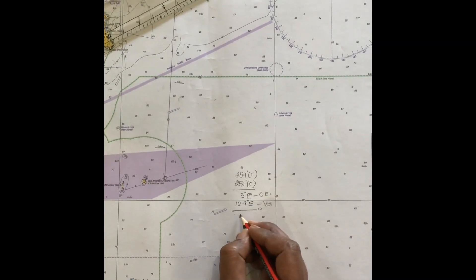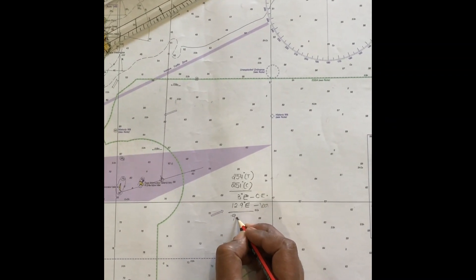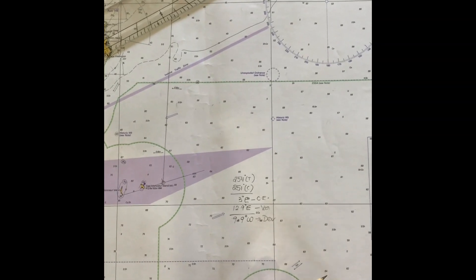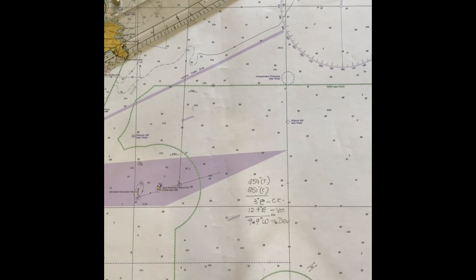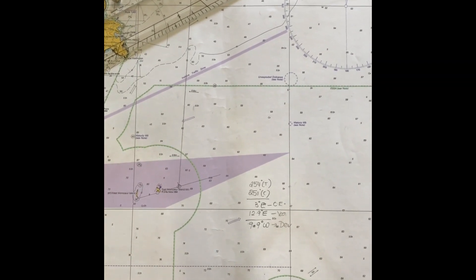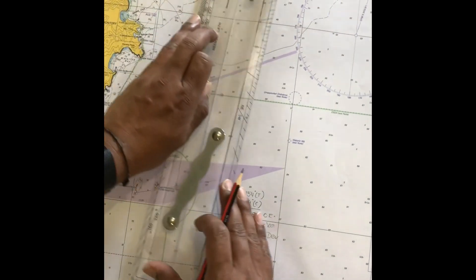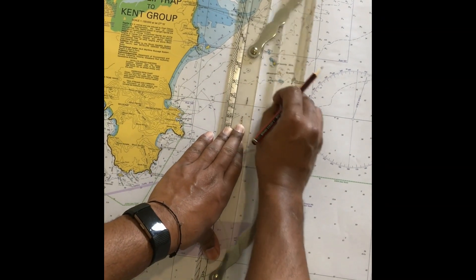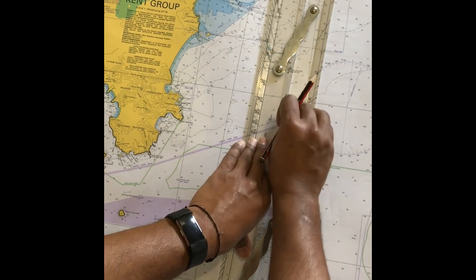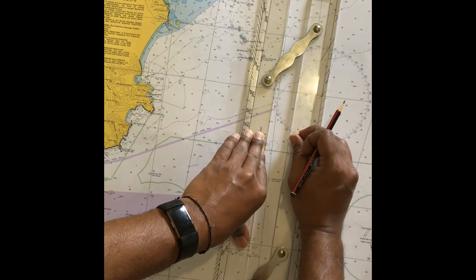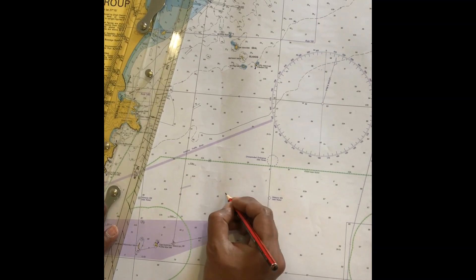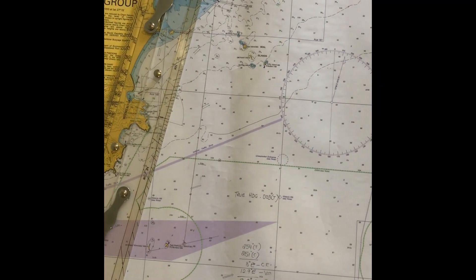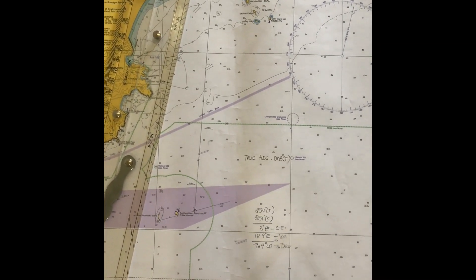So my deviation in this case would be about 9.9 degrees west. Now I have to compare this deviation using the deviation card. First, let me find my true heading. When I join the two positions — Number One Buoy and my ship's position — and move the parallel ruler to the compass rose, the heading I get is about 003 degrees. So my true heading, or true course, is 003 degrees true.